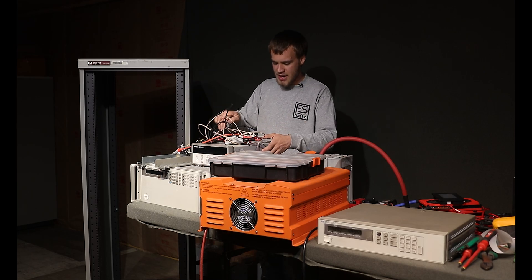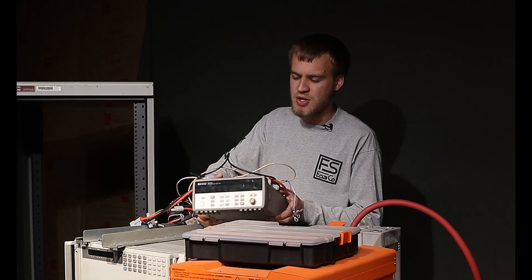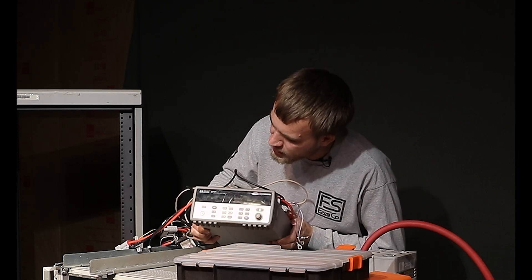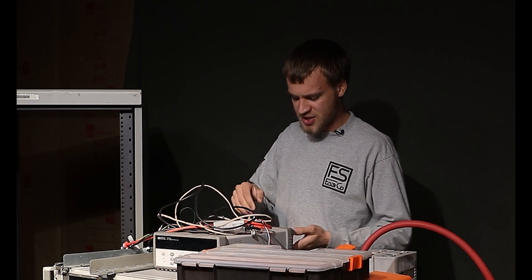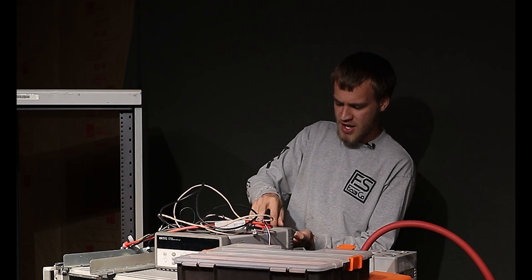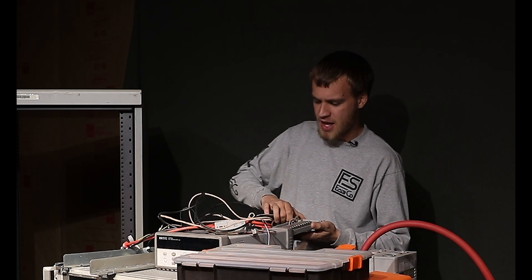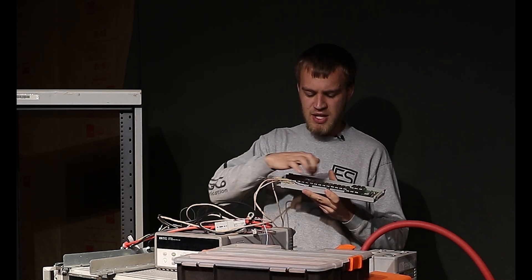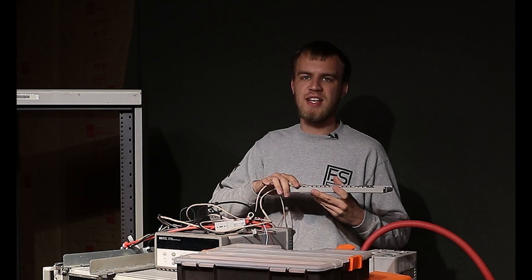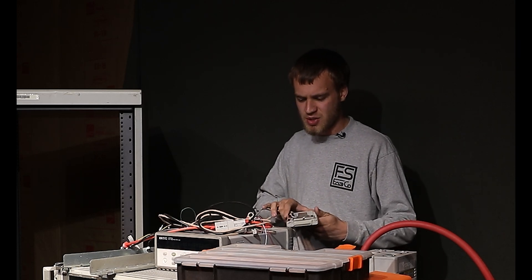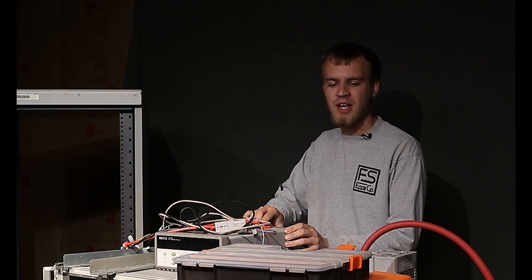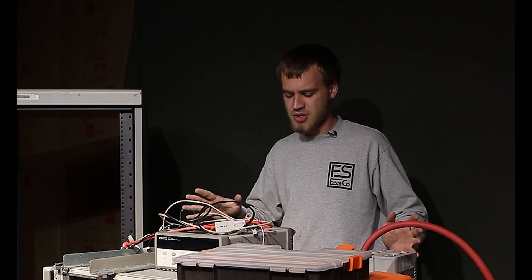And there's a data acquisition unit here. This is a Hewlett Packard, this one is a 34970A. This essentially has cards that go in the back and we'll get some close-ups, but these cards have relays on them and we can select between 16 different sets of high and low pins. So we can use that for individual cell voltage monitoring and a lot of test and measurement stuff here.